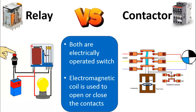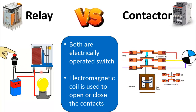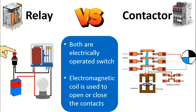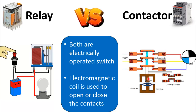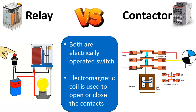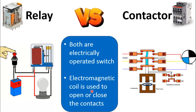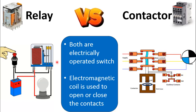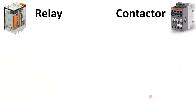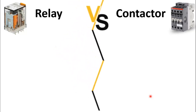Whenever you energize an electromagnetic coil it will operate as a switch and energize the load. These are the power contacts connected with this electromagnetic coil, and whenever this coil is energized the contact makes and powers up the load. Both these components have an electromagnetic coil and contacts which are used to energize or de-energize the load.